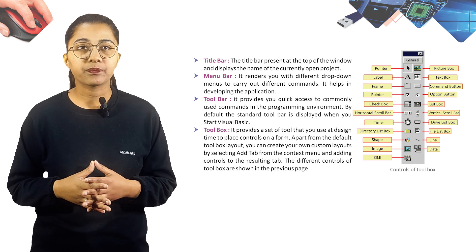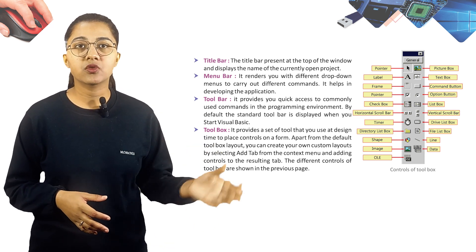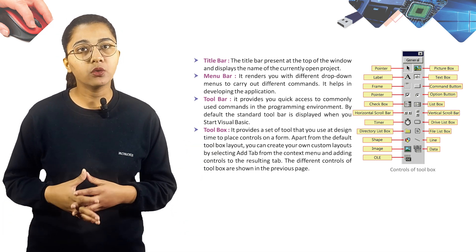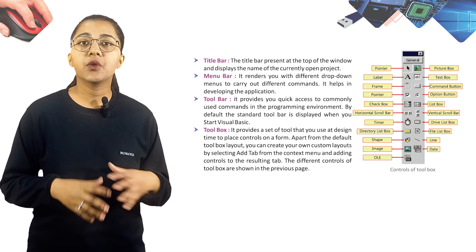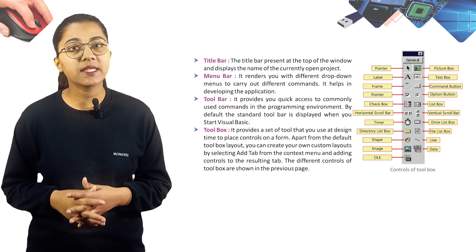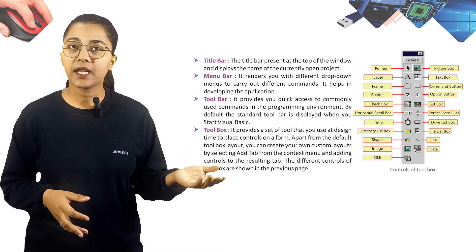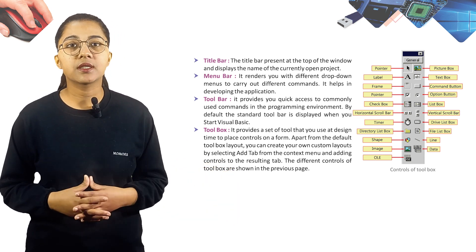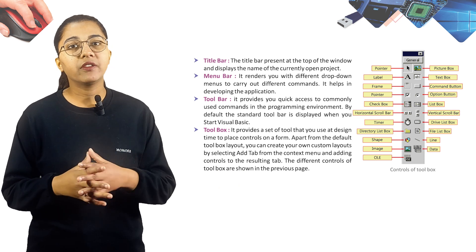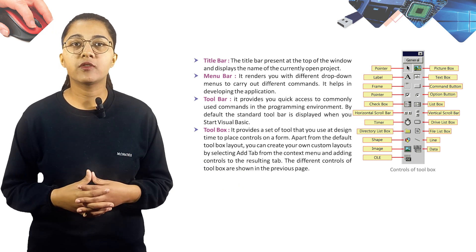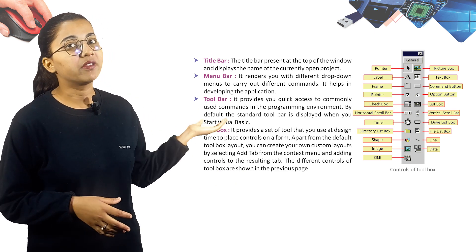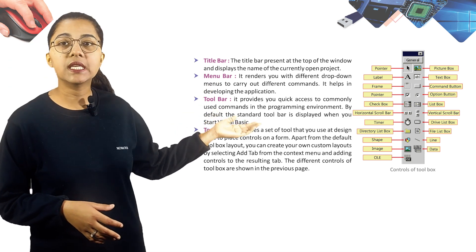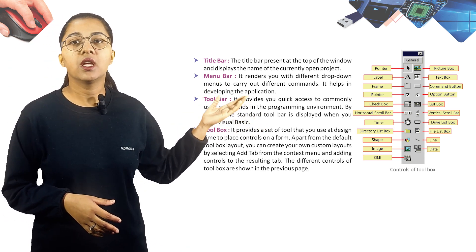The Toolbox provides a set of tools that you use at design time to place controls on a form. Apart from the default toolbox layout, you can create your own custom layouts by selecting Add Tab from the context menu and adding controls to the resulting tab.